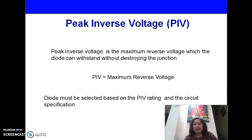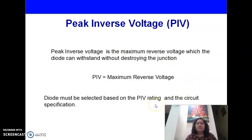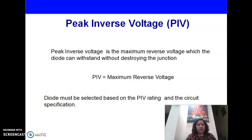Peak inverse voltage is a very important parameter for the design of a half-wave rectifier. It is defined as the maximum reverse voltage which the diode can withstand without destroying the junction. When the diode is reverse biased, it acts like an open circuit and the complete input voltage appears across the diode. Therefore, the diode must be selected based on the peak inverse voltage and the circuit specification.